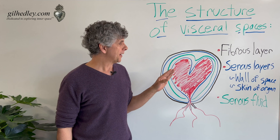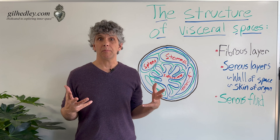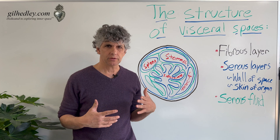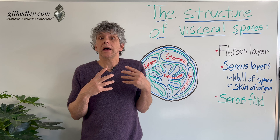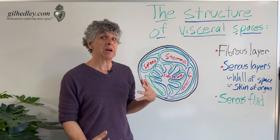The pattern repeats: we have our fibrous layer and our two serous layers with a fluid in between them. I showed you the heart as a symbol or representation of the structure of visceral spaces. The heart actually has its own independent wrap, but I didn't want to give you the idea that all other organs are each individually wrapped with all those layers, because sometimes they hang out with company.